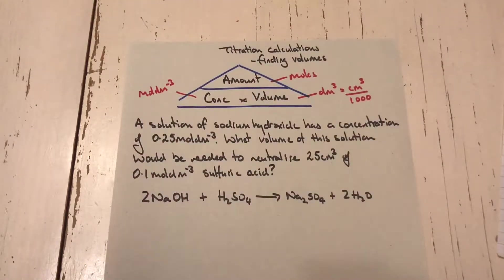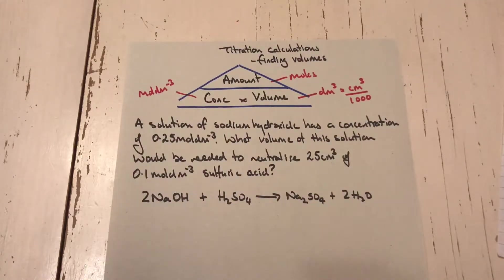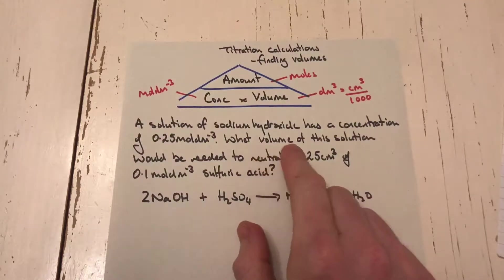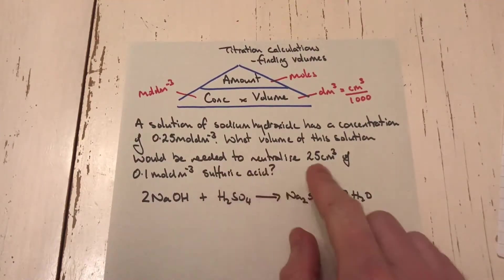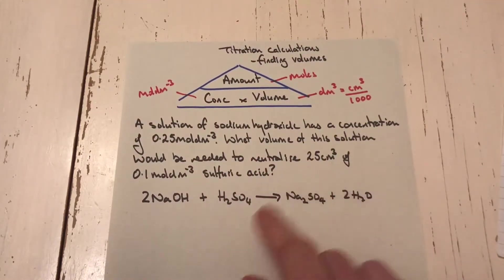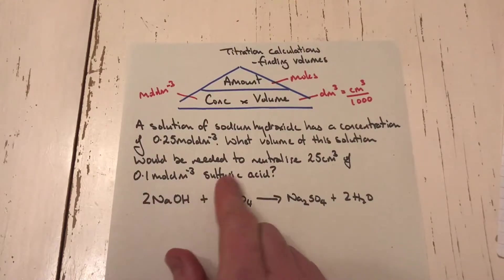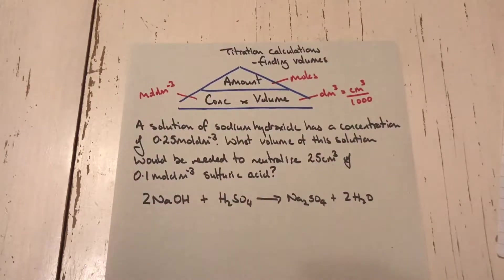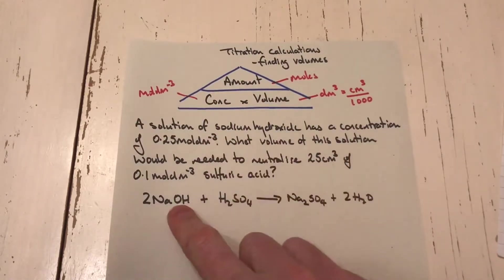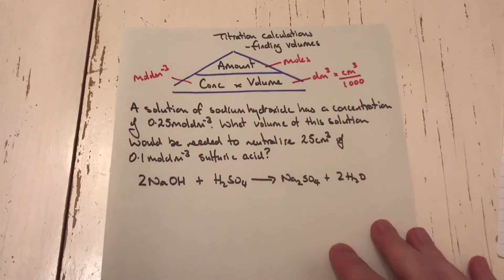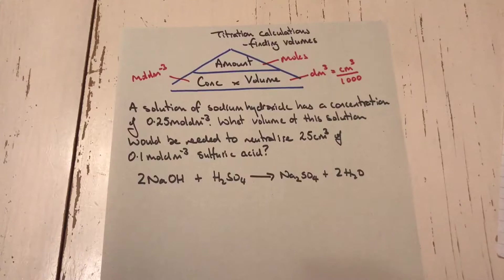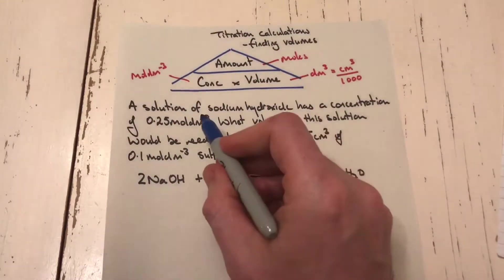Here's the question: a solution of sodium hydroxide has a concentration of 0.25 mol/dm³. What volume of this solution is needed to neutralize 25 cm³ of a 0.1 mol/dm³ sulfuric acid solution? I'm going to add this information to the balanced equation for the neutralization reaction.